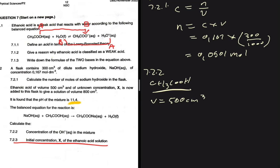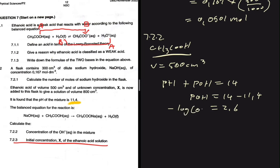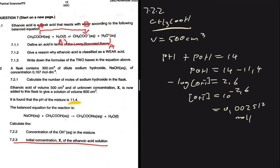7.2.2 asks us to calculate the concentration of OH⁻ in the mixture. We know that pH + pOH = 14, so pOH = 14 − 11.4 = 2.6. Since pOH = −log[OH⁻], the concentration of OH⁻ = 10^(−2.6) = 0.002512 mol/dm³.